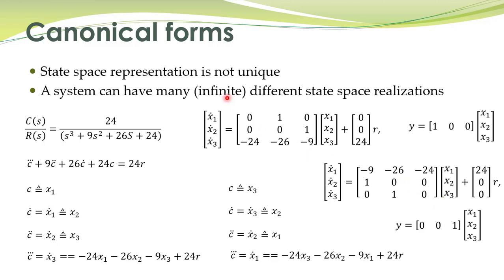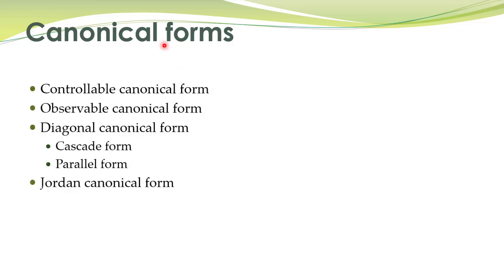Among all these state-space representations, some are of significant importance and those representations are called canonical forms. Today's lecture will cover canonical form representations of state-space models. These include controllable canonical form, observable canonical form, diagonal canonical form, and Jordan canonical form.